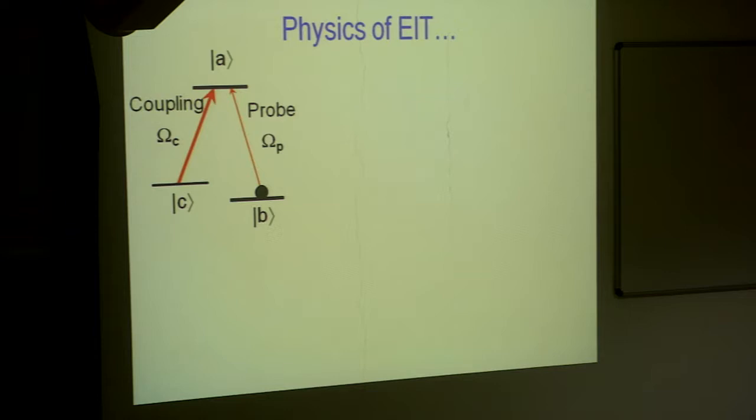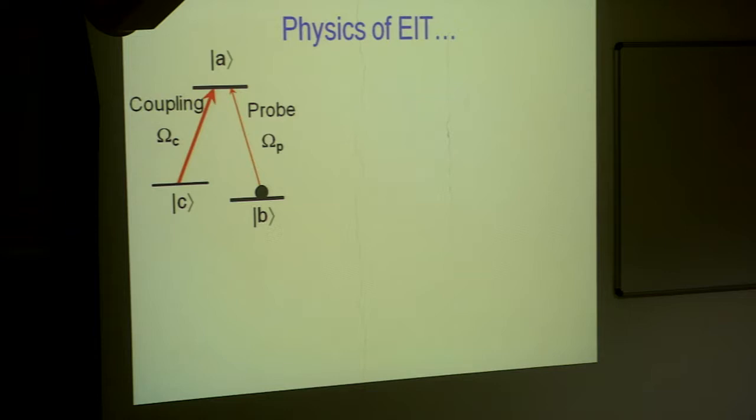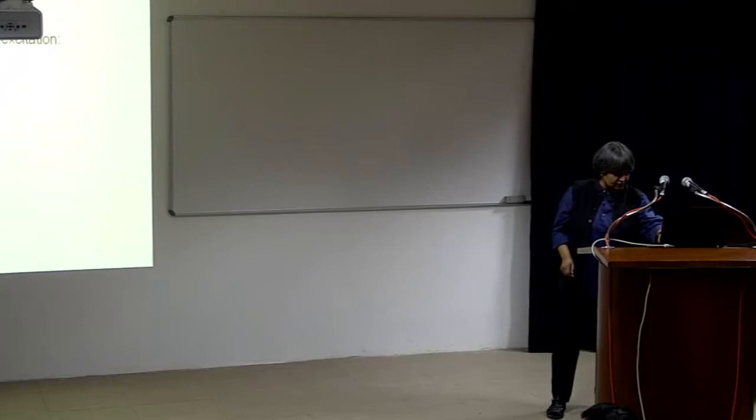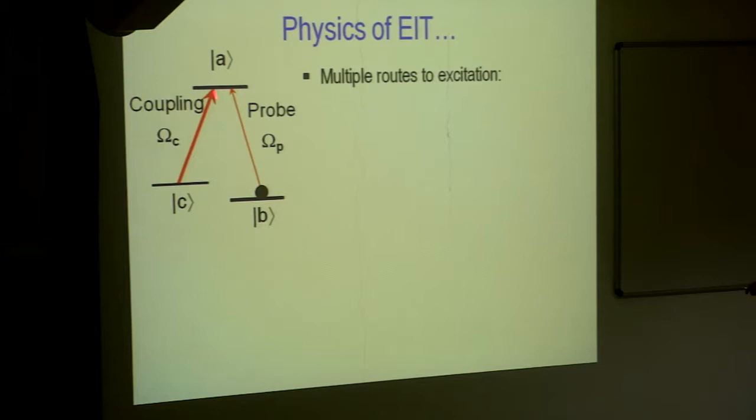You would always have this capital lambda kind of a configuration. So, it is called a lambda system. Now, there are many ways of understanding what the hell is going on, because when this is on resonance, you would always have absorption, if I did not have this coupling beam. On resonance, I am not having absorption anymore, I am having perfect transparency.